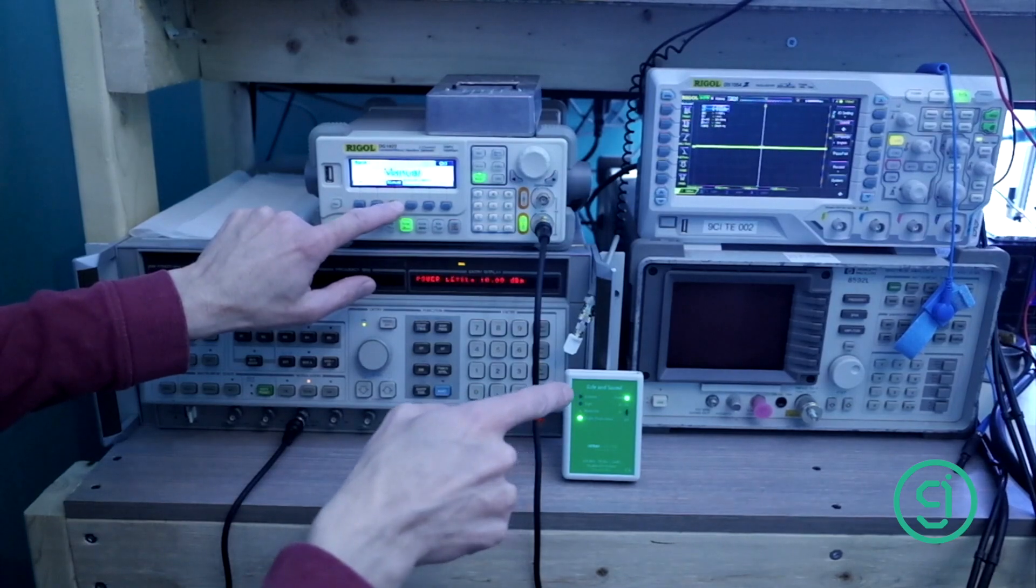Okay, we're starting at 100 microsecond pulse, manual trigger and right trigger. Meter responded. I'm going to change the pulse width to 50 microseconds. Manual trigger and trigger, looks good. Going down to 20 microseconds. Trigger, looks good.